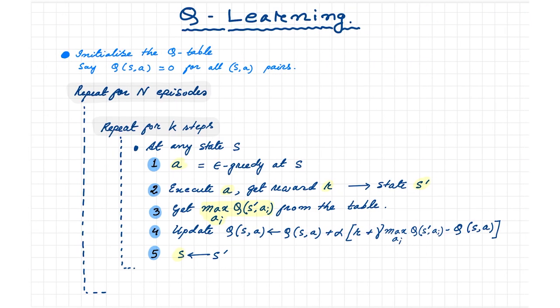Here is the full Q-learning algorithm. First we initialize the Q table with some arbitrary values for all the state-action pairs. Then we iterate for n episodes. At each episode we start from the initial state and we perform k steps if we do not encounter the terminal state.